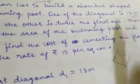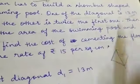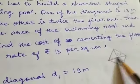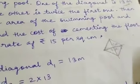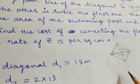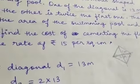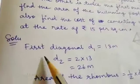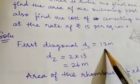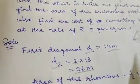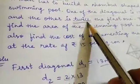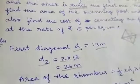The first diagonal is 13 meters. The second diagonal is double that, which is 2 into 13, so d2 equals 2 into 13 which is 26 meters.